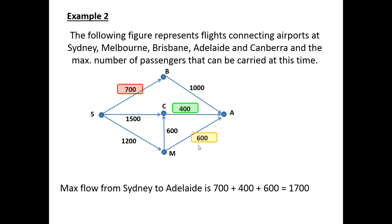When we put this together, we can see the maximum flow from Sydney to Adelaide via all possible combinations is 700 passengers plus 400 plus 600, which gives a total maximum flow of 1700 passengers in any one particular day from Sydney to Adelaide.